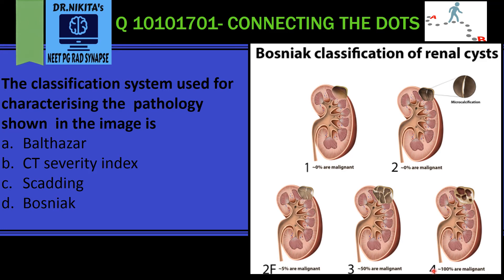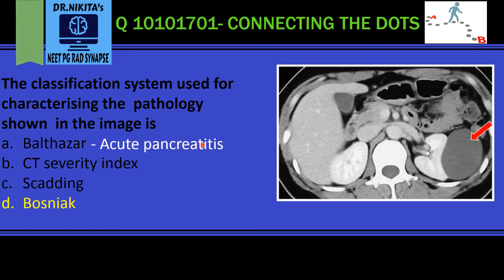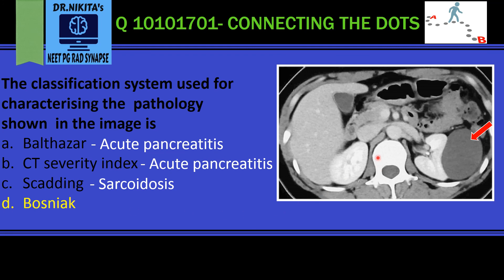The correct answer is option D, that is Bosniak. To look at the other options: the Balthazar system is used for acute pancreatitis; CT severity index is also used for acute pancreatitis; Scadic scoring criteria is used for sarcoidosis; and the Bosniak system is used for renal cyst characterization.